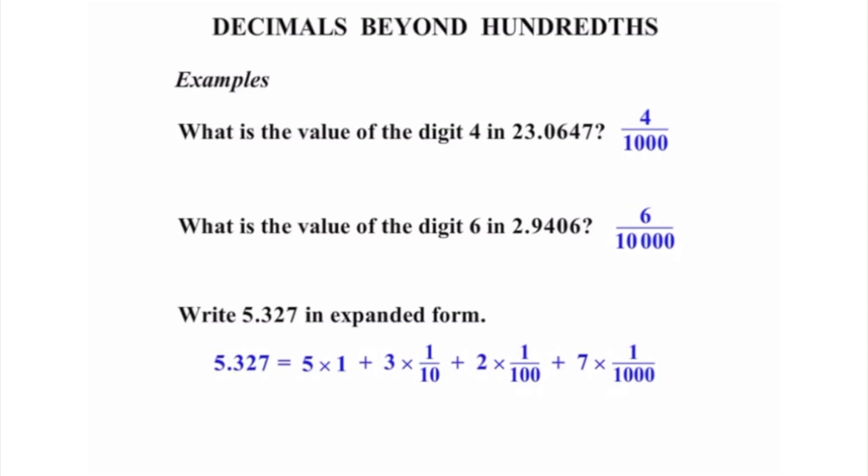Now that's one way of writing expanded form, which is fantastic. Another way we can write it is this: we can write 5 to start with, plus, well that 3 was in the tenths column, so it's worth 3/10, so we can write it like that, plus again. That's in the hundredths column, we've got 2 of them, so we have 2/100, plus again. And finally the 7 was in the thousandths column, we have 7 of them, so 7/1000. Excellent. Well that concludes the lesson. Good luck with your questions.